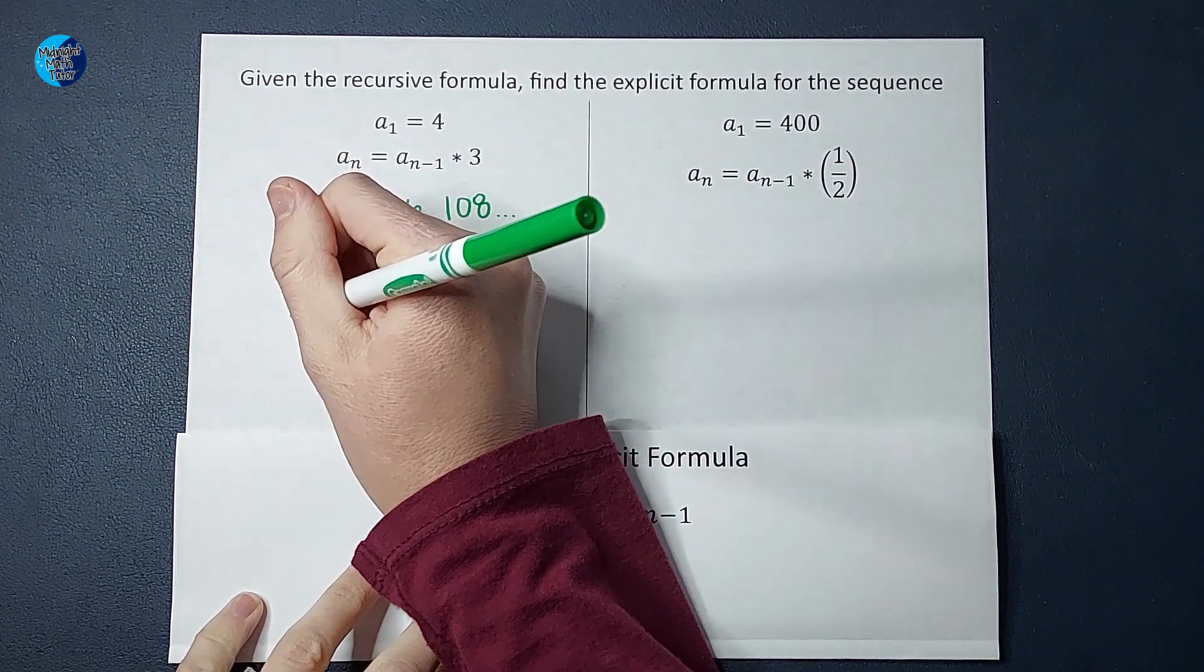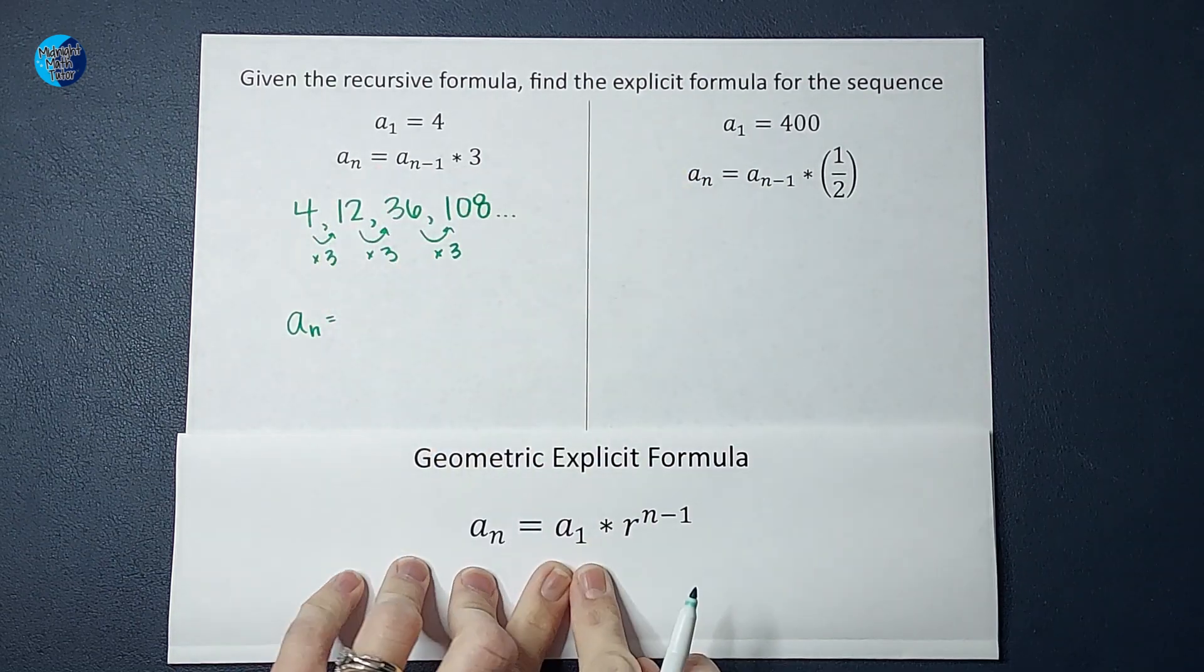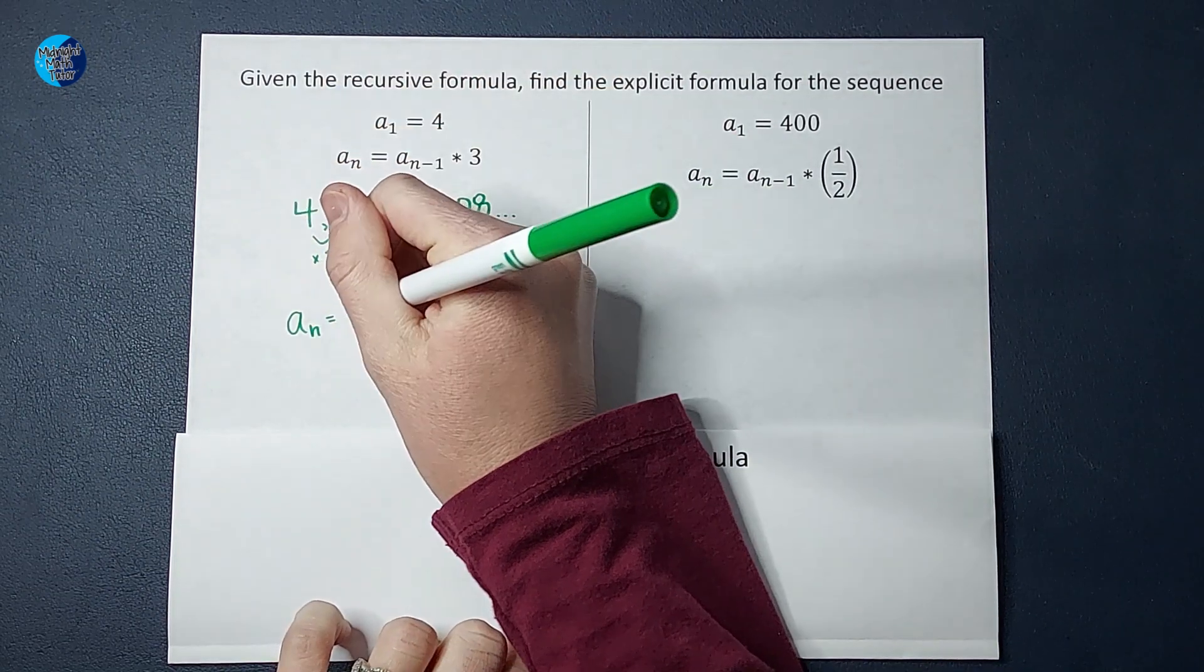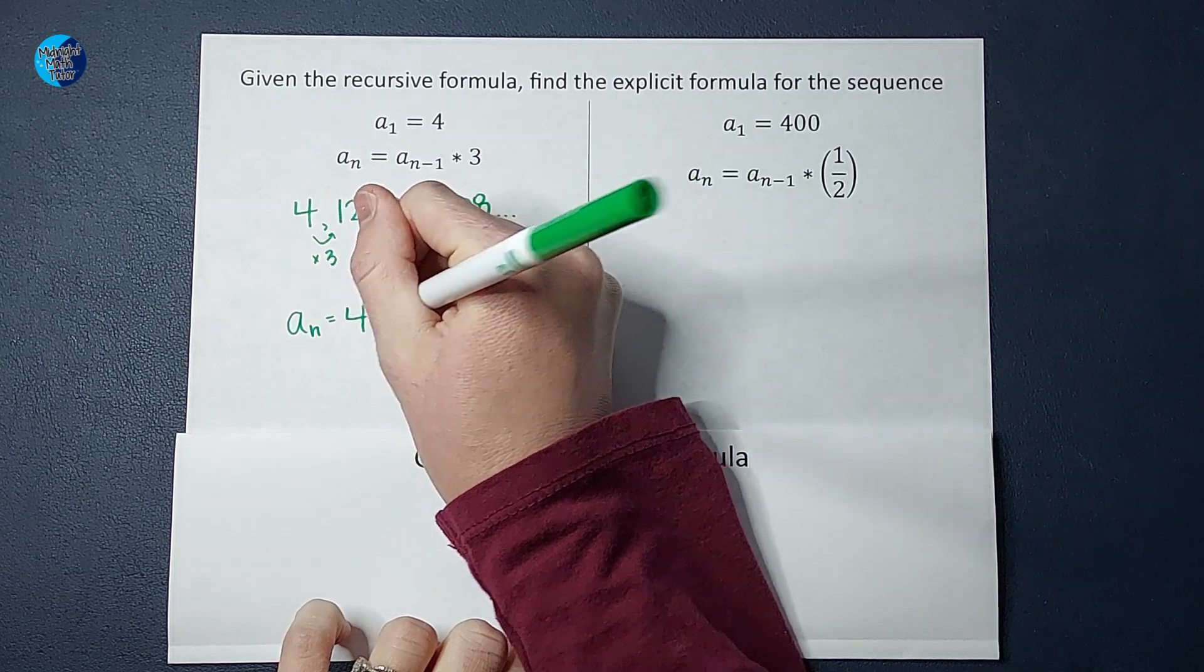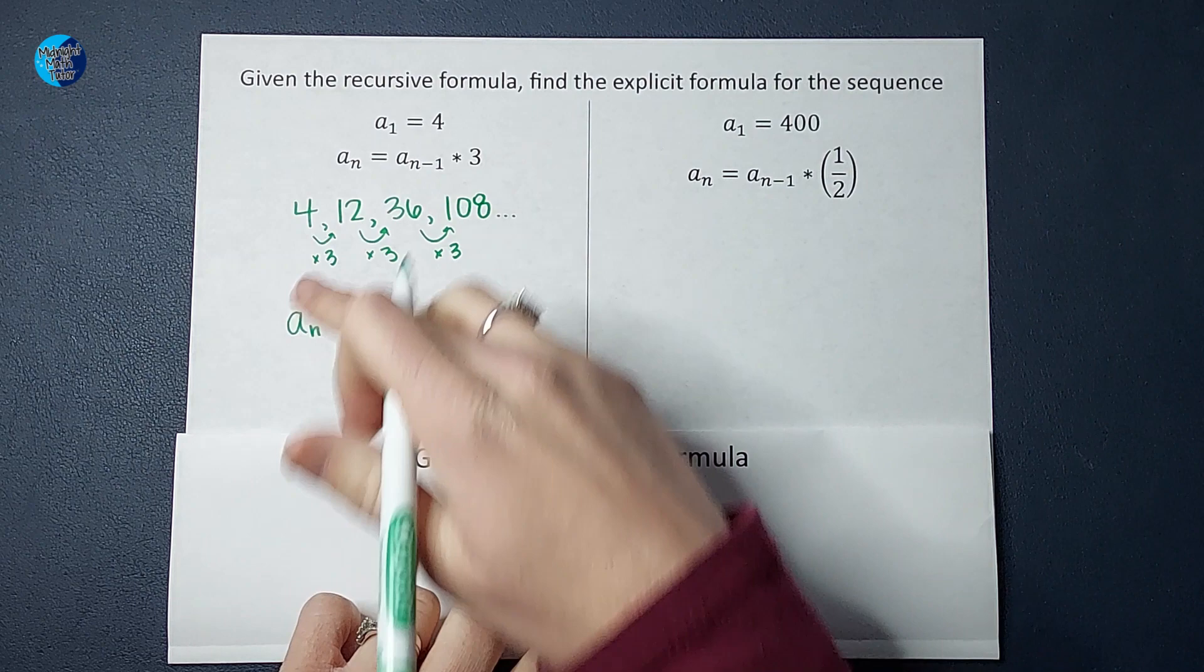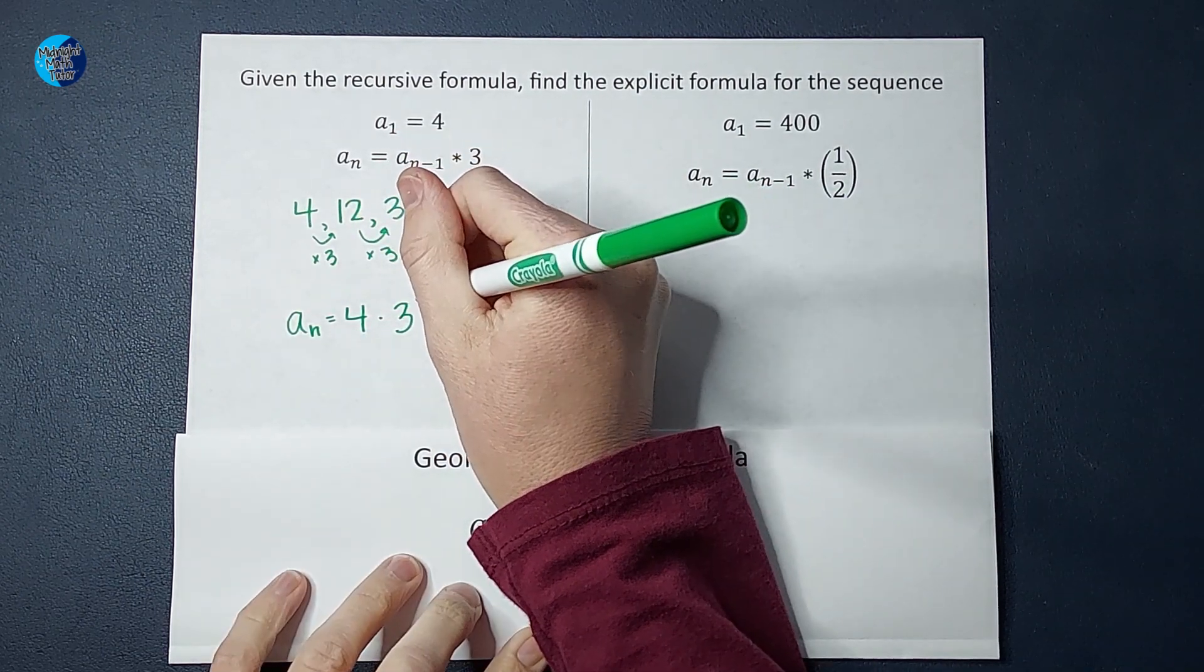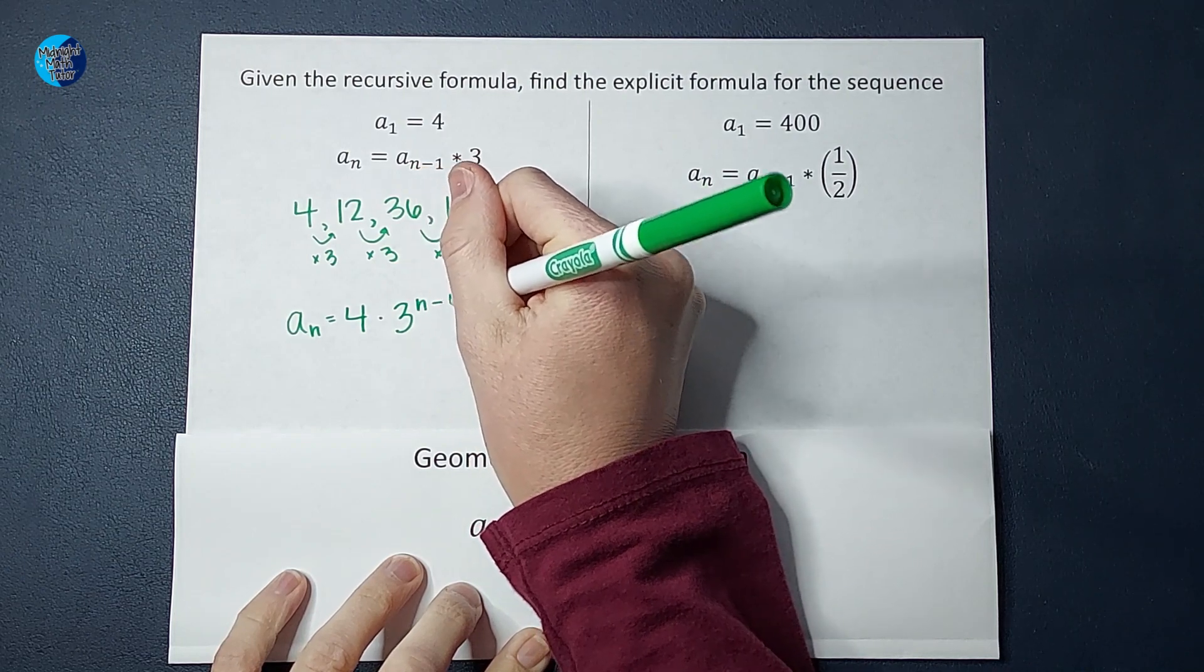So whatever number we want to find, a sub n, you take the first term, which is four, multiply by the common ratio r. That's just what we're doing each time. We're multiplying by three to the power of n minus one.